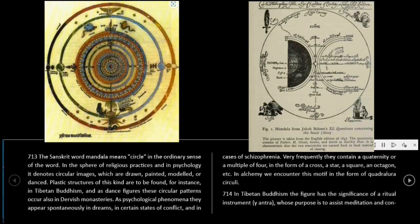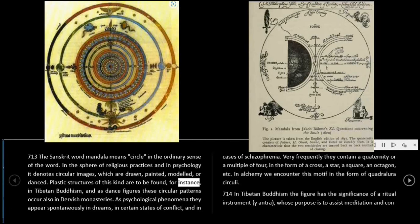713: The Sanskrit word mandala means circle in the ordinary sense of the word. In the sphere of religious practices and in psychology, it denotes circular images which are drawn, painted, modeled, or danced. Plastic structures of this kind are to be found, for instance, in Tibetan Buddhism, and as dance figures these circular patterns occur also in dervish monasteries. As psychological phenomena, they appear spontaneously in dreams, in certain states of conflict, and in cases of schizophrenia.